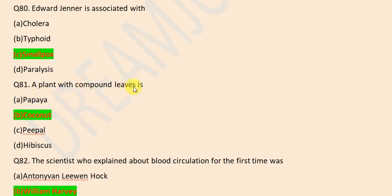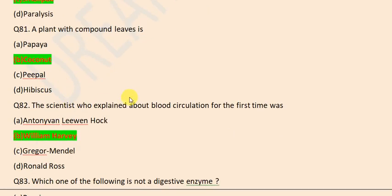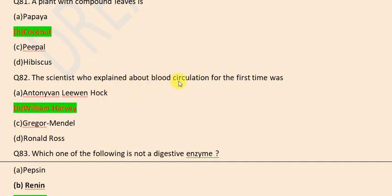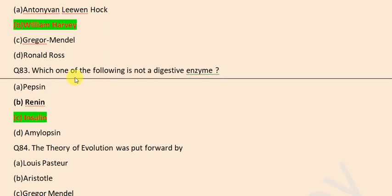A plant with compound leaves is coconut. The scientist who explained about blood circulation for the first time was William Harvey. Which one of the following is not a digestive enzyme? Insulin.